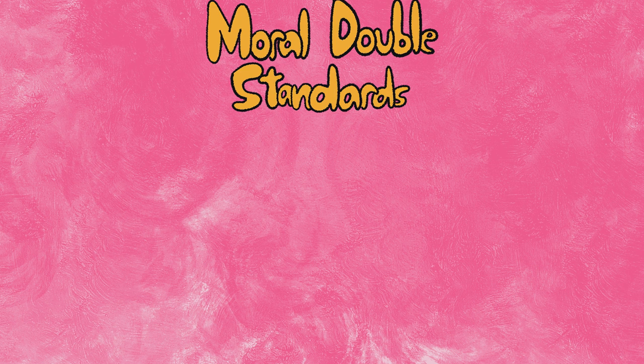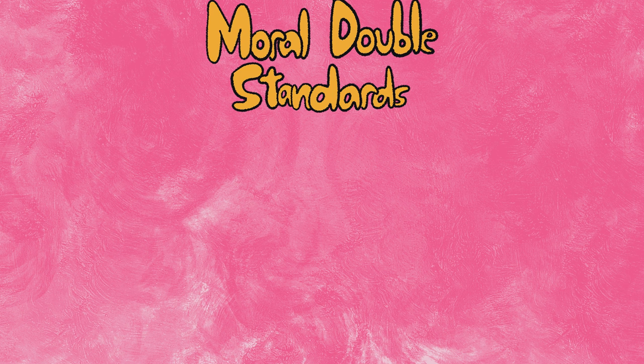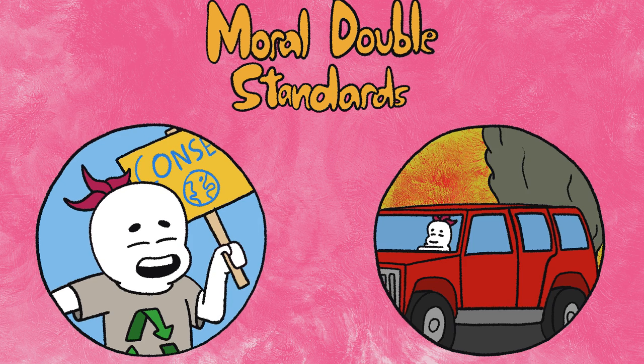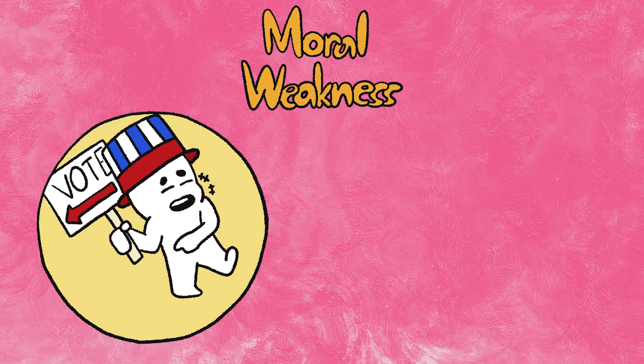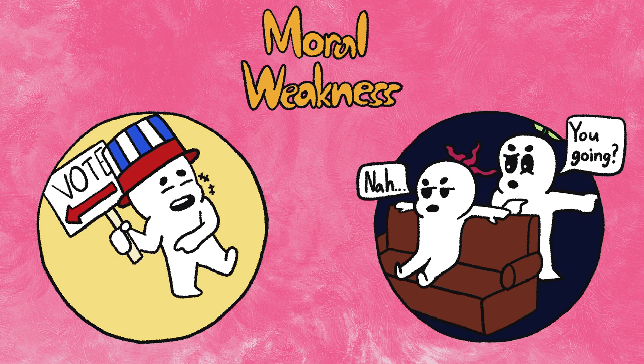As a result of the moral double standards, people are much fairer with themselves than with others for committing the same immoral acts. The other category, moral weakness, refers to behavior conflicting with attitudes, like believing that everyone should vote but having never voted yourself.